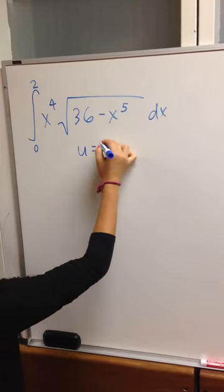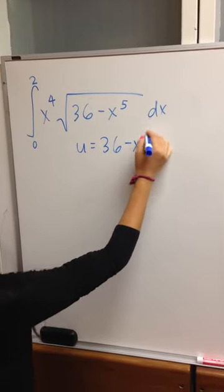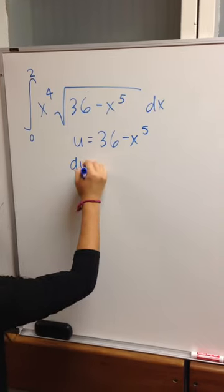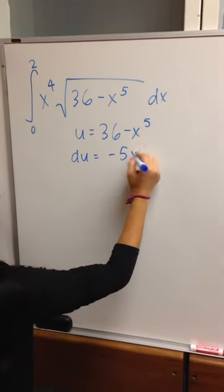The root for this problem is what's inside the square root, which is 36 minus x to the fifth. So du will be negative 5x to the fourth dx.